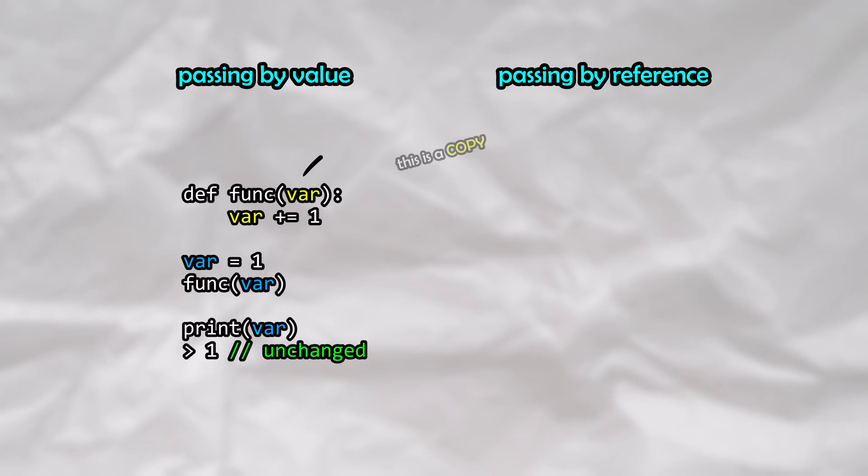We're all taught about these two methods of passing arguments to functions. With pass by value, a copy of the argument is sent into the function, and changes made to this copy do not affect the original variable.